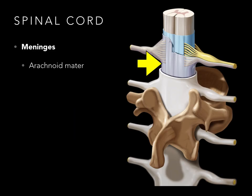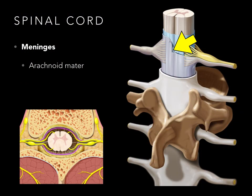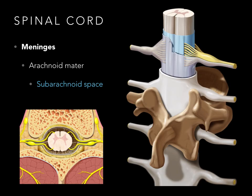The arachnoid mater is the next deeper layer — arachnoid because it looks like spider webs, arachnoid for spider. And there's our arachnoid mater. Right below the arachnoid mater there is a space called the subarachnoid space — prefix sub means below. In purple, there's our arachnoid mater, and that arrow is showing the subarachnoid space. The trabeculae make those spider web appearances that go to the pia mater. That subarachnoid space is filled with cerebrospinal fluid, or CSF.